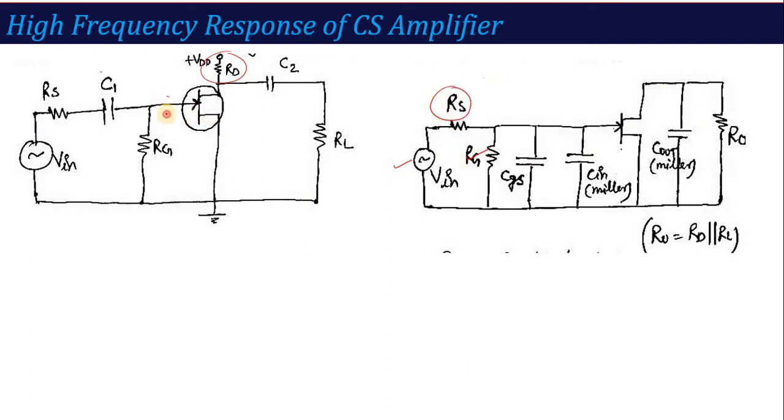This is input as it is, R_S as it is, R_G as it is. Then gate and source terminal, this is C_GS. And the output, what is the resistance here? According to Miller's theorem, that is C_in Miller and C_out Miller. And the output side will be equivalent resistance R_0, that is equal to R_D parallel with R_L.